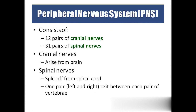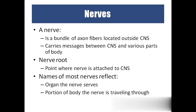Coming to the peripheral nervous system: all nerves coming out of the brain and spinal cord form the peripheral nervous system. From the brain, we have 12 pairs of cranial nerves; from the spinal cord, we have 31 pairs of spinal nerves. Cranial nerves arise from the brain and spinal nerves come from the spinal cord — one from the right and one from the left forming a pair. The point at which nerves come out is called the nerve root. Nerves are named based on the organs they supply.